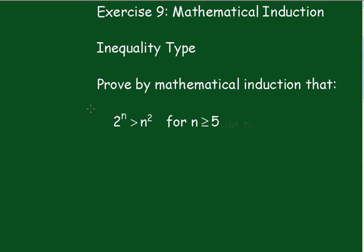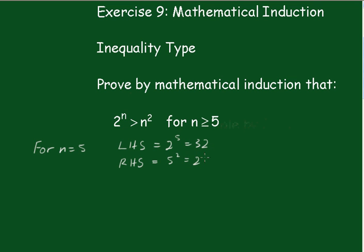This time it's for n greater than or equal to 5, so for n equals 5: the left hand side is equal to 2 to the 5, which is 32. The right hand side is equal to 5 squared, which is 25. And clearly 32 is greater than 25, therefore the statement is true for n equals 5.